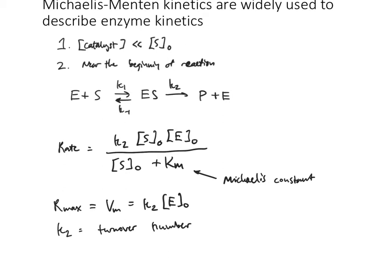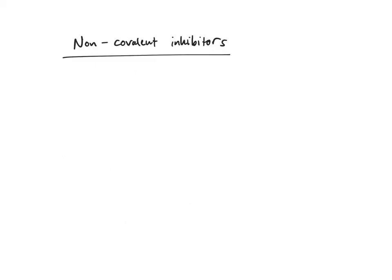Frequently in publications, you'll be given the Michaelis constant for a reaction, and you're probably also going to be given Rmax, though you might also be given this turnover number when the biochemical kinetics properties of enzymes are presented in literature.